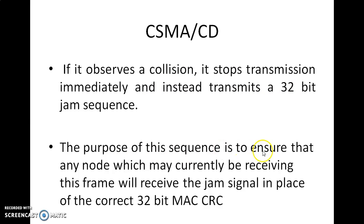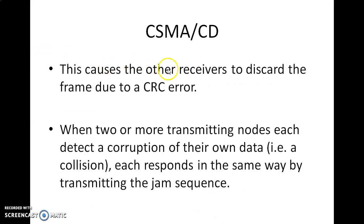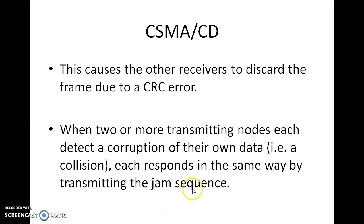The purpose of this jammed sequence is to ensure that any node which may currently be receiving this frame will receive the jammed signal in place of the correct 32-bit MAC CRC. This causes other receivers to discard the frame due to CRC errors. When two or more transmitting nodes each detect a corrupt CRC of their own data, they respond in the same way by transmitting the jammed sequence.